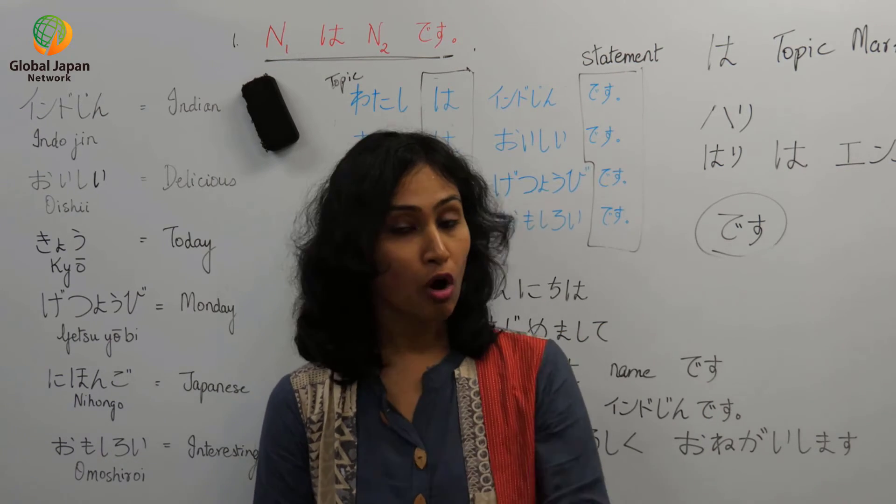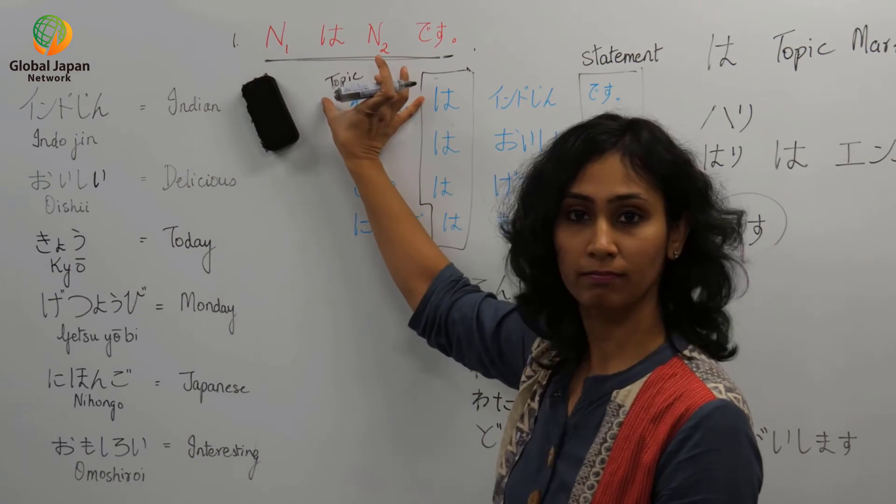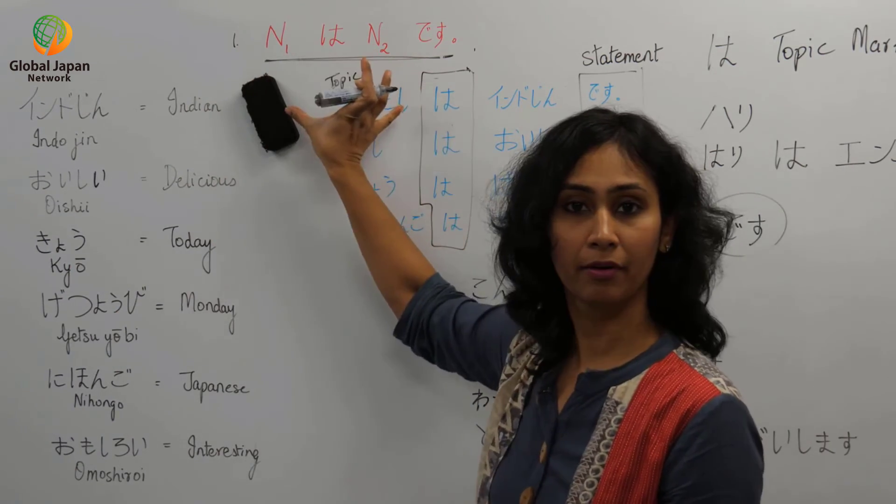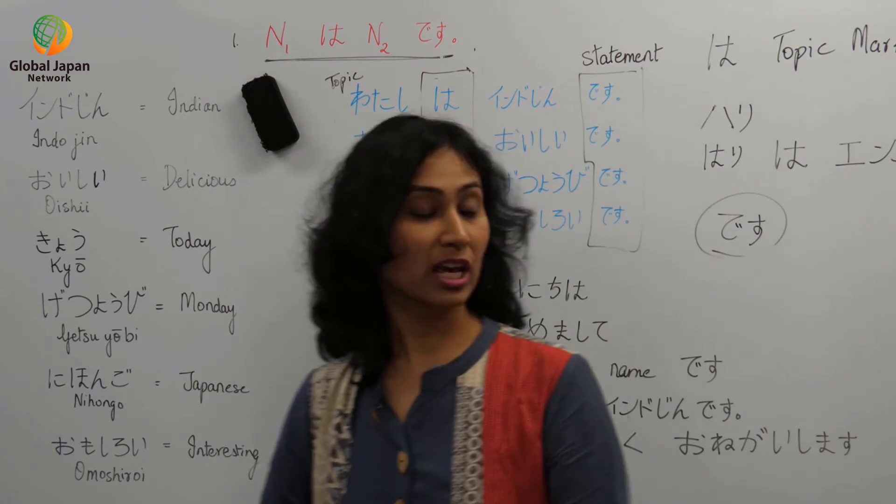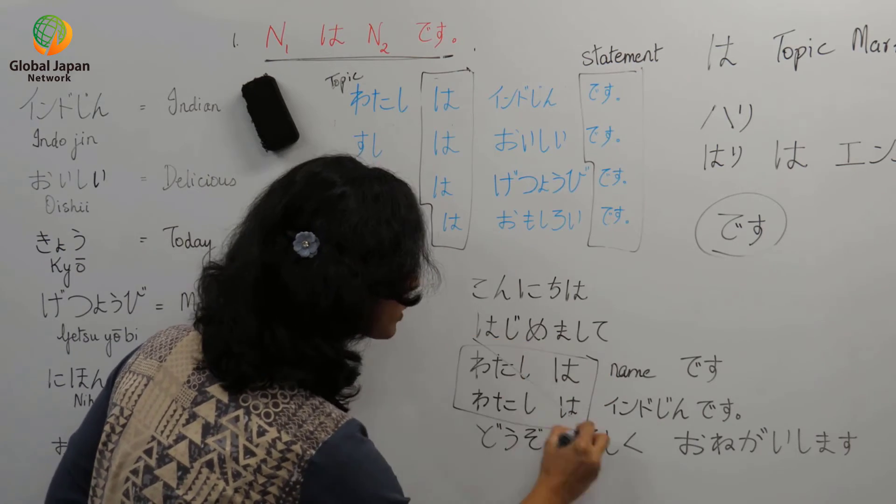In English it is not okay to drop the subject. The noun has to be there. But in Japanese it's okay to drop this subject. It's okay.